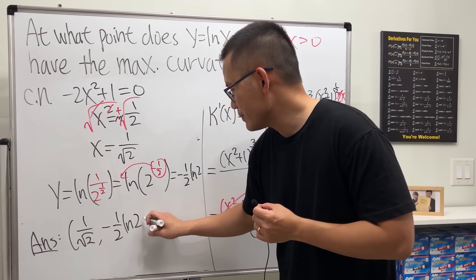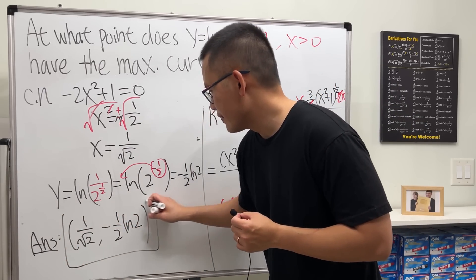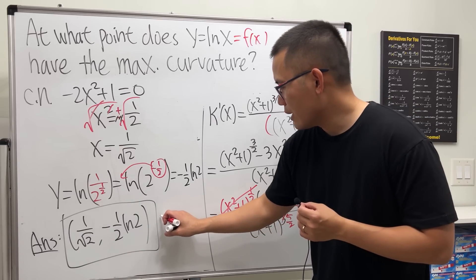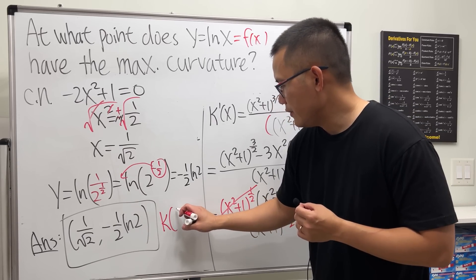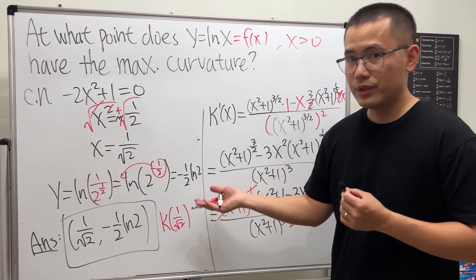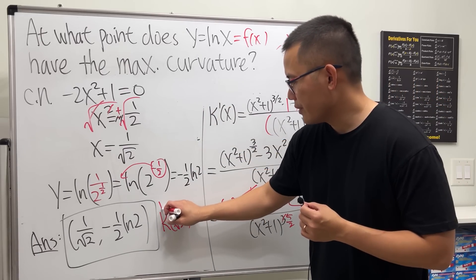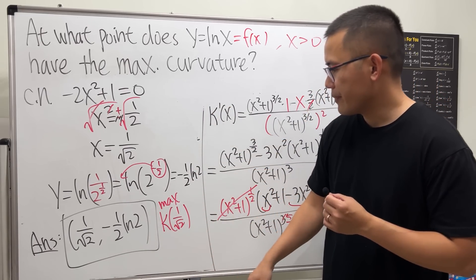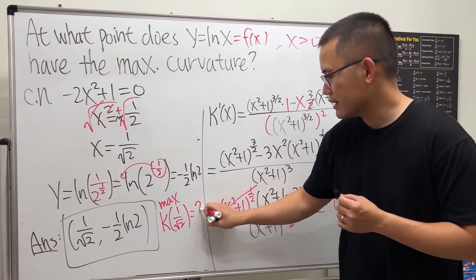Of course you can find the actual maximum curvature value by plugging x = 1/√2 into the curvature expression we found earlier — I'll leave that to you.